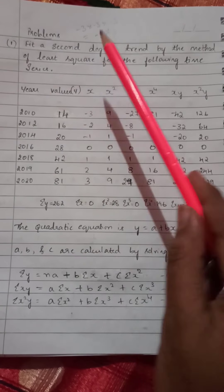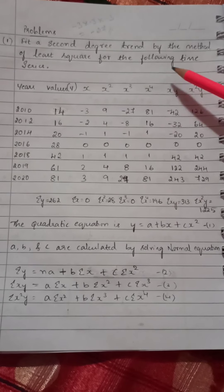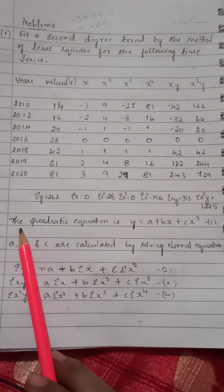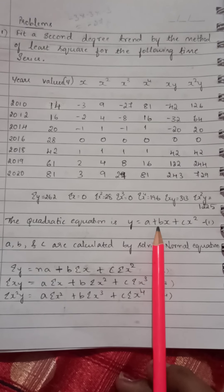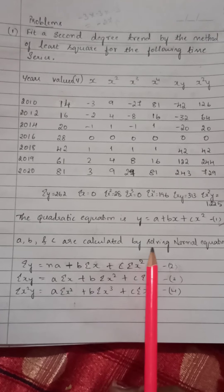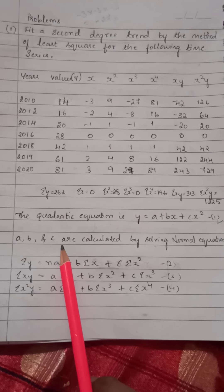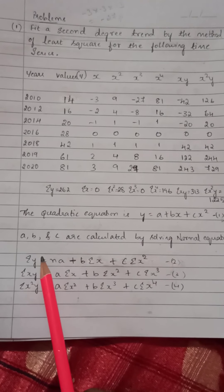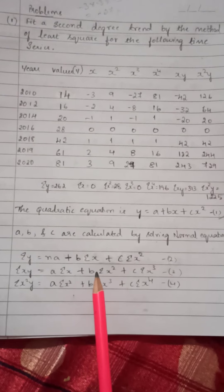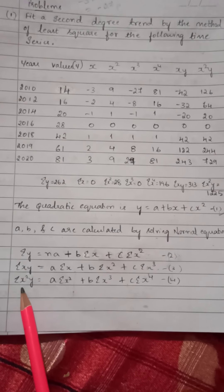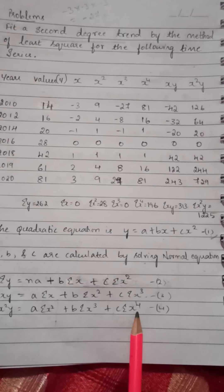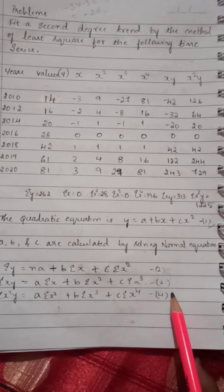Look at the question. They have given a 2nd degree trend by the method of least squares for the following time series. 2nd degree trend means parabolic trend or quadratic trend. First write down the quadratic equation — the main equation: y = a + bx + cx², label it equation 1. Then write down all the normal equations to find a, b, and c values. We have 3 normal equations: summation y = na + b·summation x + c·summation x²; summation xy = a·summation x + b·summation x² + c·summation x³; and summation x²y = a·summation x + b·summation x³ + c·summation x⁴. Label these as equations 2, 3, and 4.